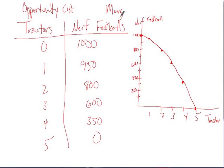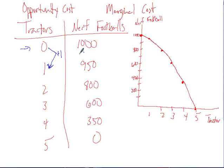What we're going to look at is what they call the marginal cost — how much does each tractor cost? If we're producing zero tractors, we can produce 1,000 Nerf footballs. If we decide to produce one tractor, we've had to pull some resources away from footballs, and we can only produce 950. So the cost to get this one extra tractor is the output we give up in terms of Nerf footballs — the marginal cost of the first tractor was 50 Nerf footballs.